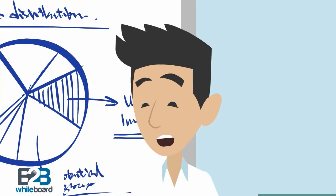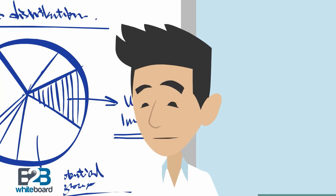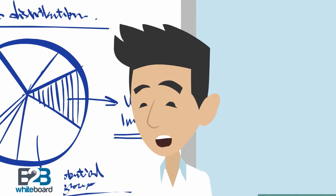Well Sandy, an iBeacon is an Apple trademark for an indoor positioning system that Apple calls a new class of low powered, low cost transmitters that can notify nearby iOS 7 devices of their presence. They can also be used by the Android operating system.